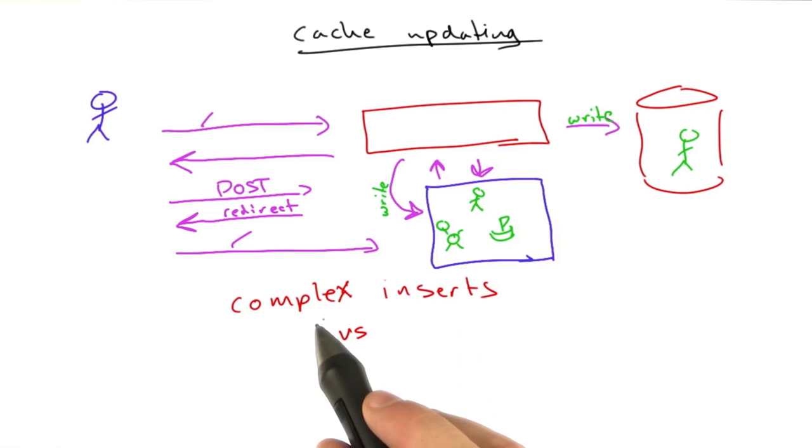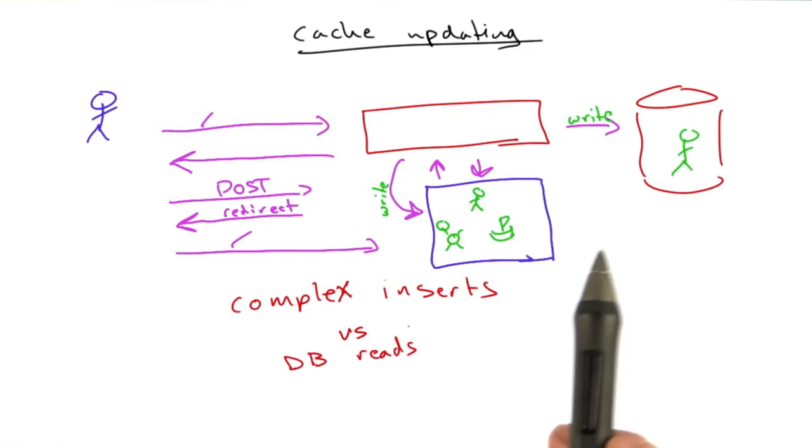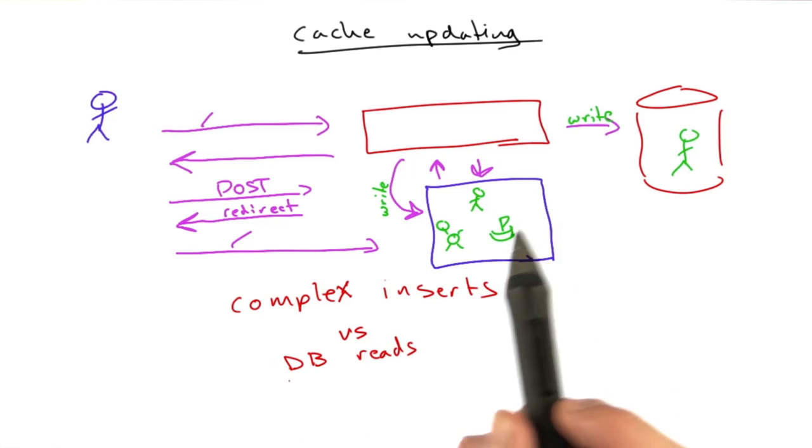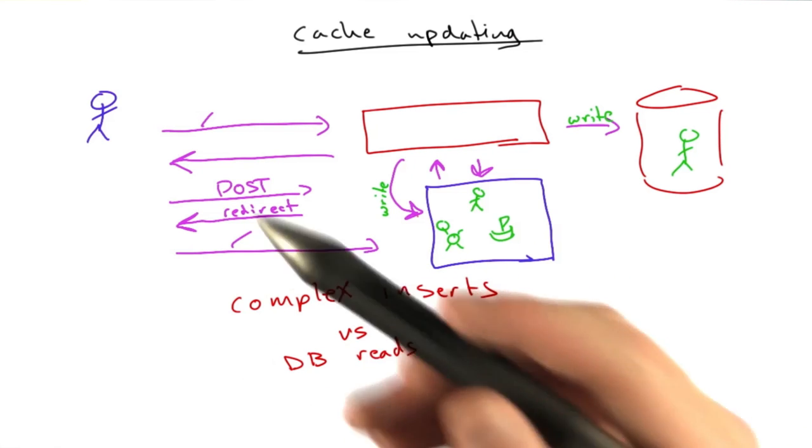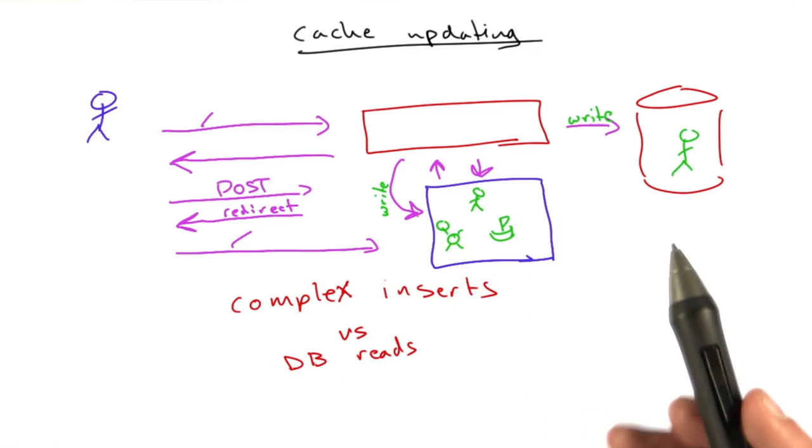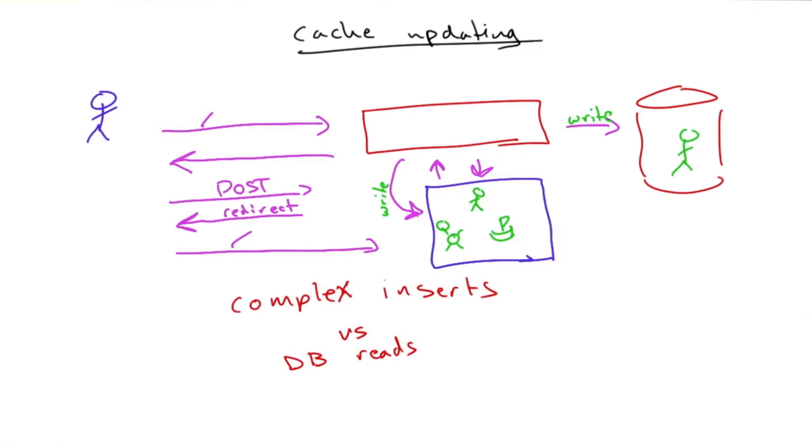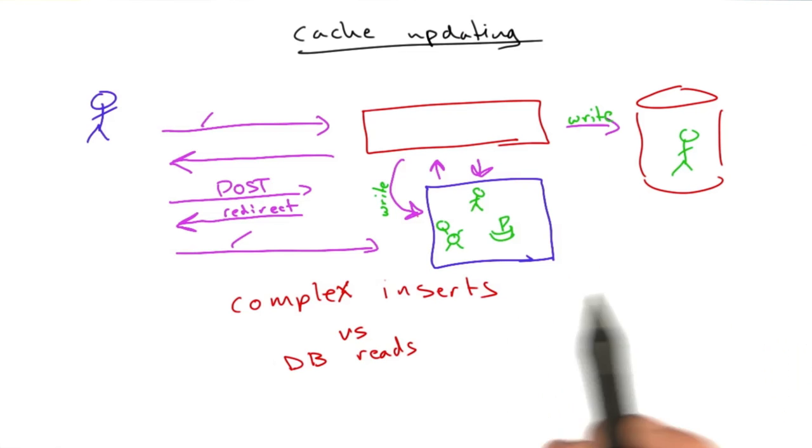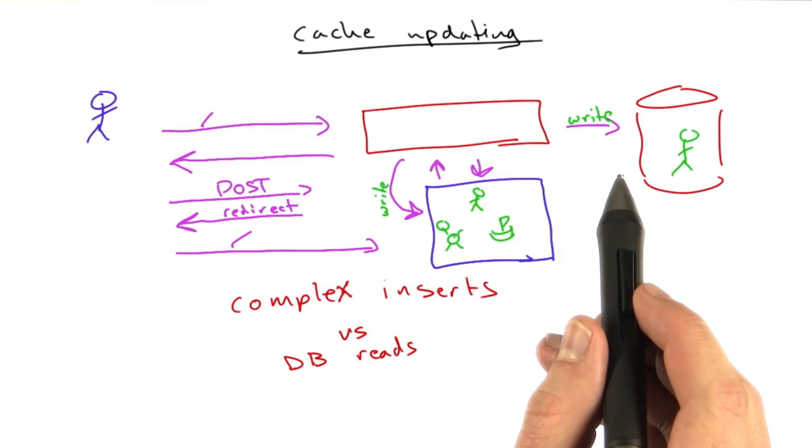So we've introduced the trade-off here of complex inserts versus database reads. On Reddit we actually do this. We have a different cache key for every listing you might look at, for every sorting, for every subreddit, et cetera. And when you submit a link or you vote, we have to update all of the possible listings that could be affected by that action. On the flip side, users are pummeling the site all the time and they never read from the database.